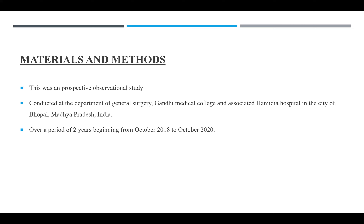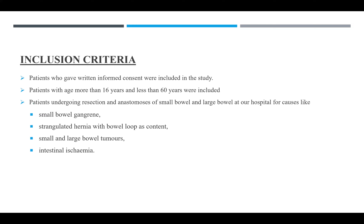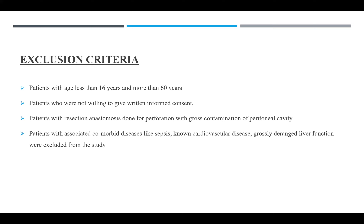This was a prospective observational study conducted at the Department of General Surgery, Gandhi Medical College and associated Hamidia Hospital in Bhopal, India, over two years from October 2018 to October 2020. Patients aged 16 to 60 years who gave written informed consent and underwent resection and anastomosis of small or large bowel for causes including small bowel gangrene, strangulated hernia with bowel involvement, small and large bowel tumors, and intestinal ischemia were included. Patients not willing to consent, those outside the age range, those with perforation with gross peritoneal contamination, and those with comorbidities like sepsis, cardiovascular disease, or grossly deranged liver function were excluded.